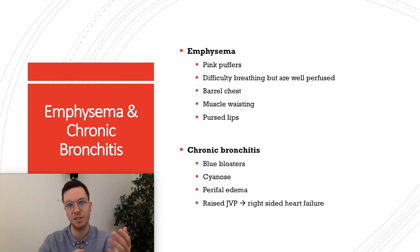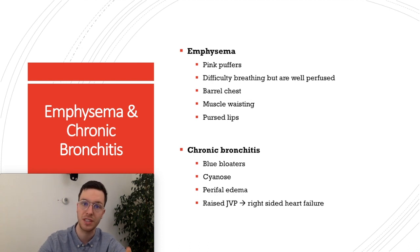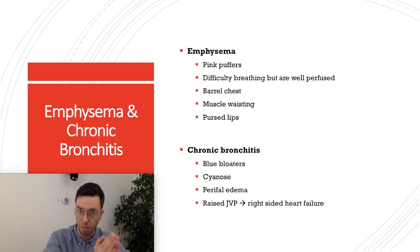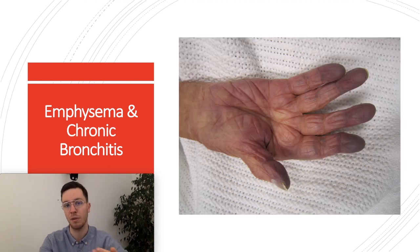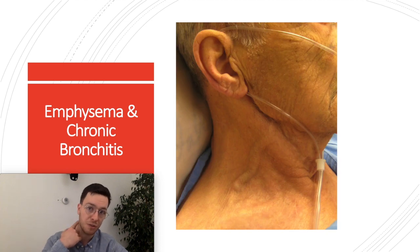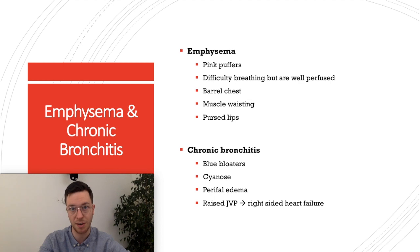Pink puffers have difficulties breathing and need to work extra hard when inhaling and exhaling. They also breathe through pursed lips. On the other hand, patients with mostly chronic bronchitis as a component of COPD are called blue bloaters. They are poorly ventilated and poorly perfused, which leads to cyanosis — low oxygen saturation — making their skin turn bluish. Those patients also have peripheral edema and a raised jugular venous pressure, visible in their neck, due to right-sided heart failure.